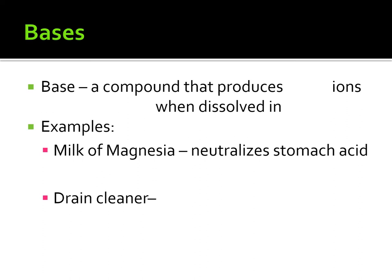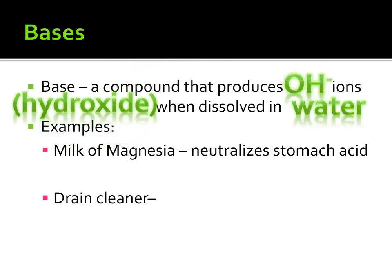Moving on to the right-hand side of the table for bases. We're going to create a bulleted list, just like we did for acids. Let's start with our definition: bases are compounds that produce hydroxide ions when dissolved in water. A hydroxide ion is simply OH with a charge of negative one. So for the definition, write: produces OH- ions in water.